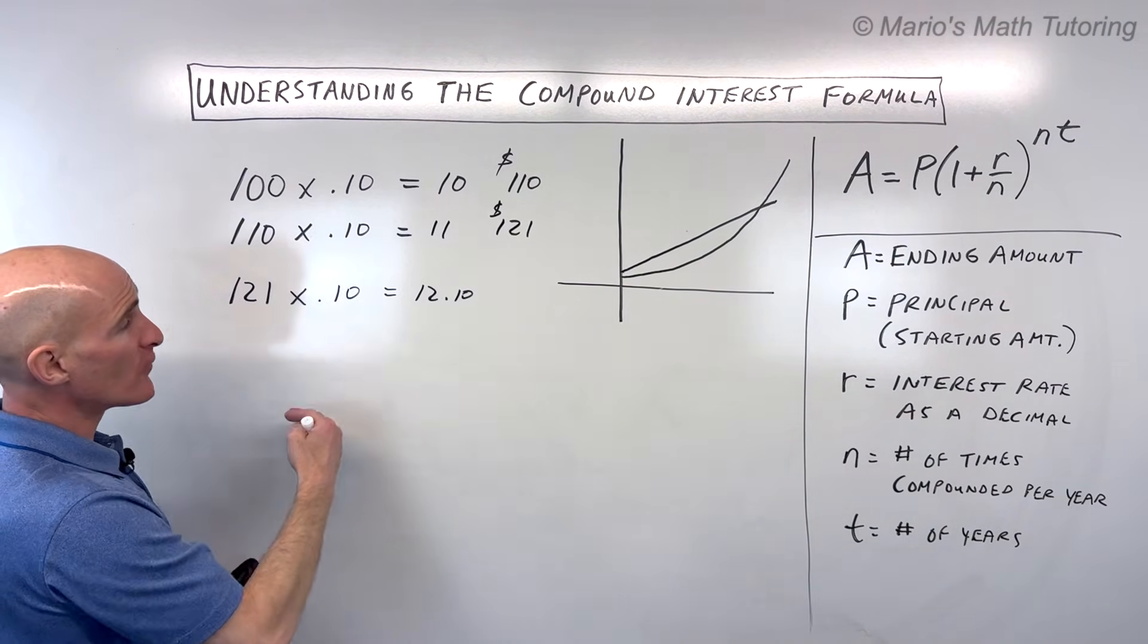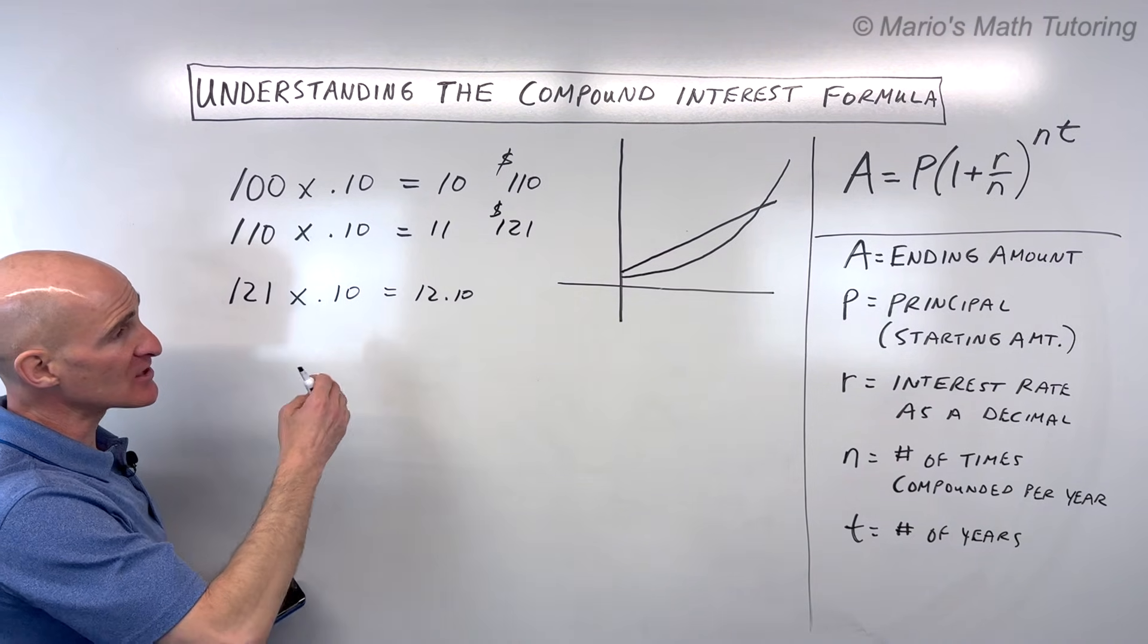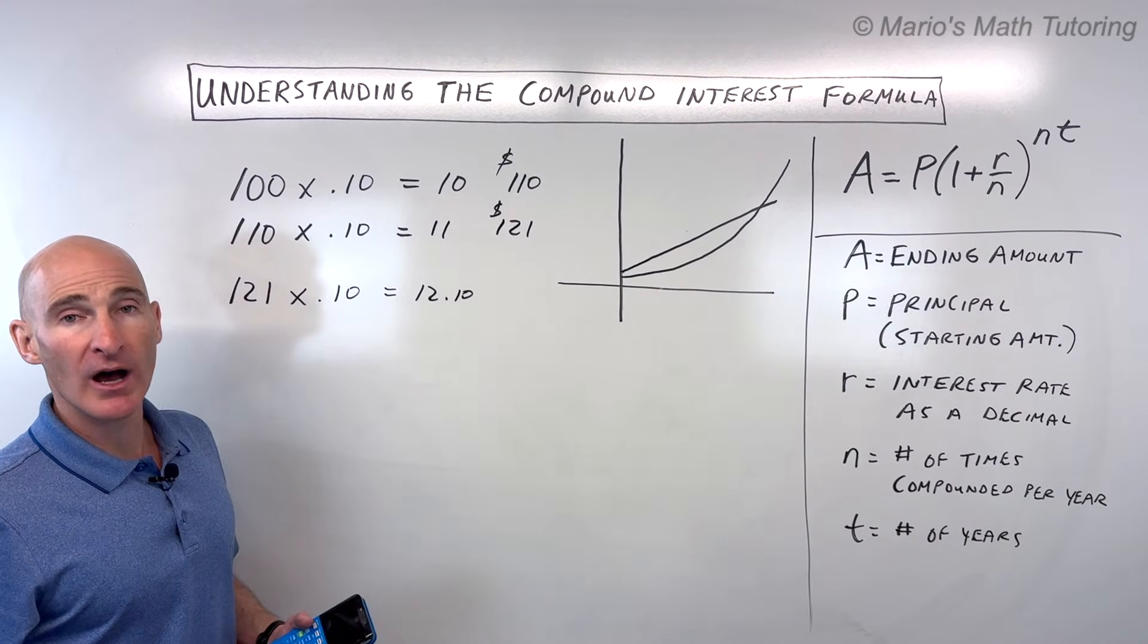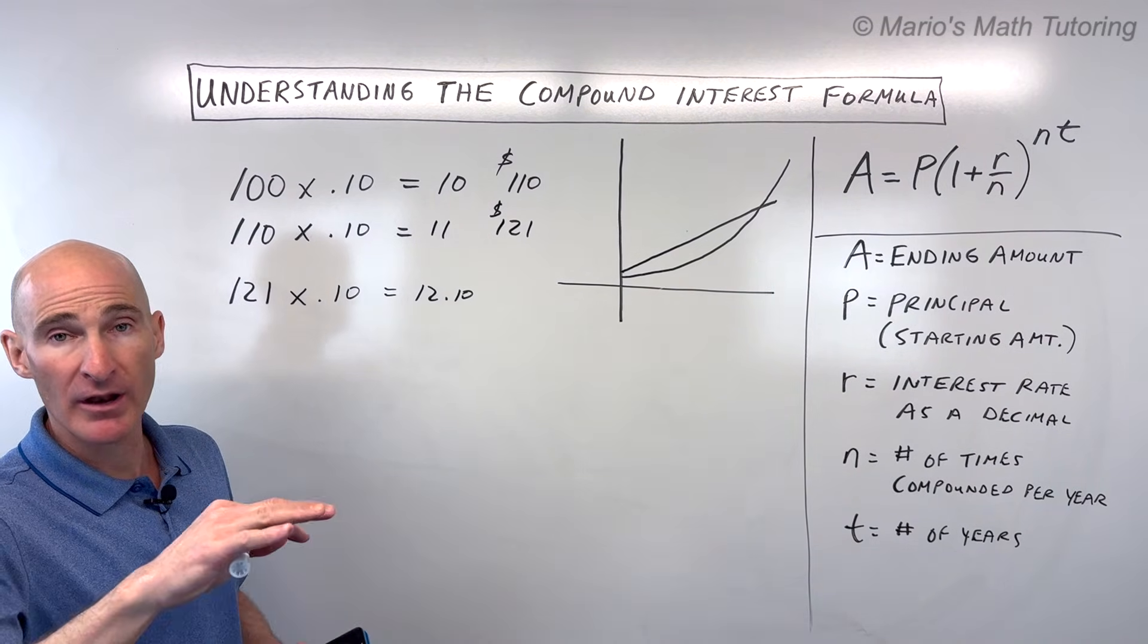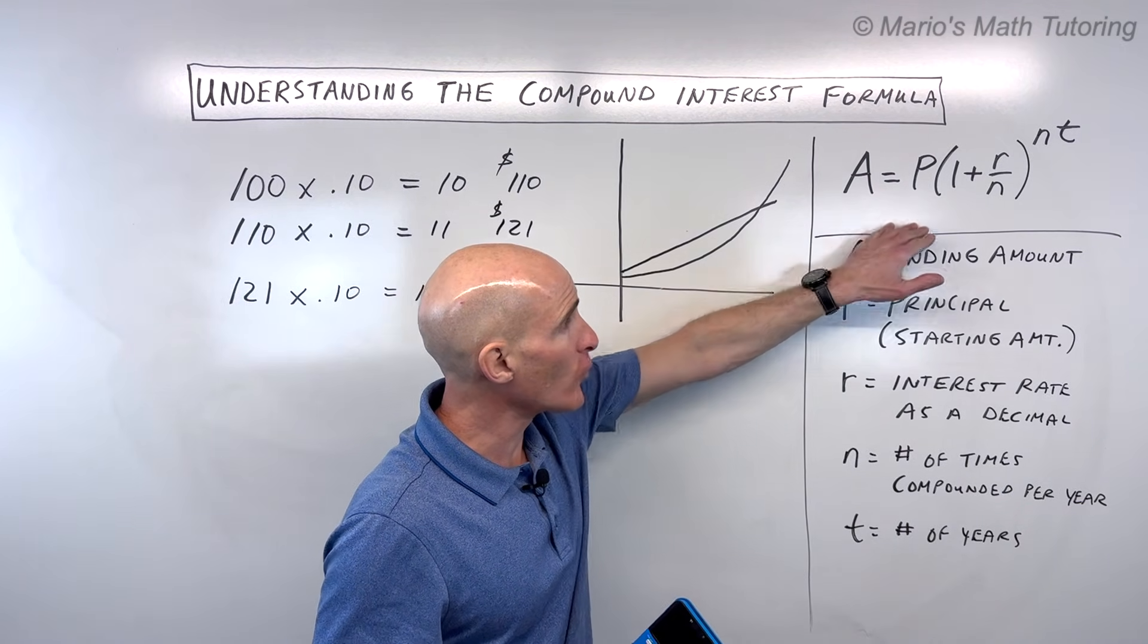And you can go ahead and do this a few more times on your own. Maybe start with $1,000 or $10,000. And you're going to see that it's going to start to increase at a faster and faster rate. So now let's talk about this formula here.